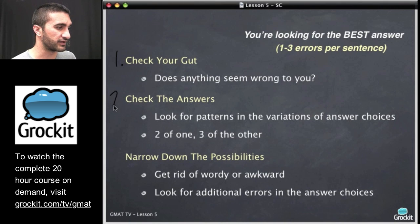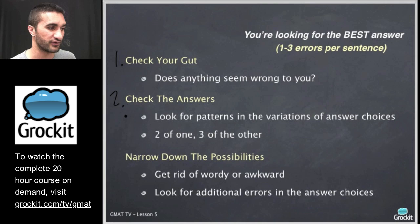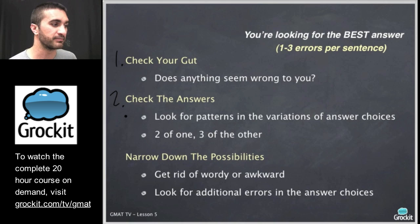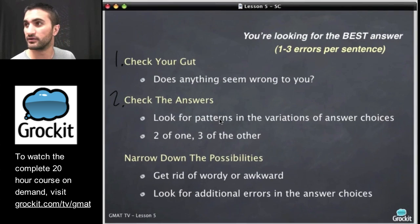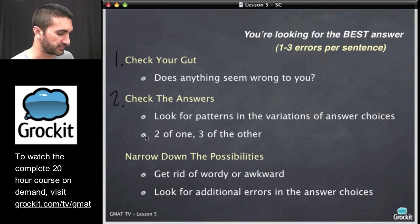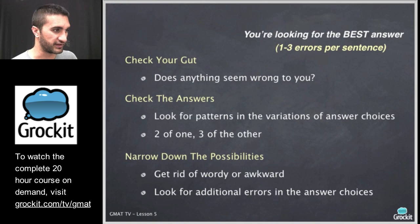The second thing we do is check the answers: look for patterns and variations in the answer choices to identify which issues are being tested. Often you'll see a two-three split among answer choices, which helps identify the specific issues on that sentence correction question. Lastly, we narrow down the possibilities — eliminate wordy and awkward answer choices, and continue looking for additional errors we hadn't already identified while reviewing the answer choices.